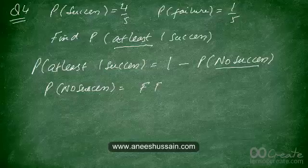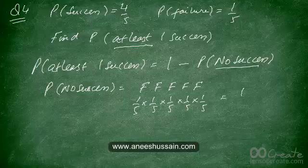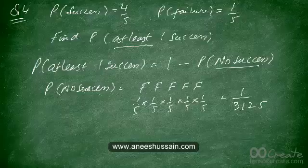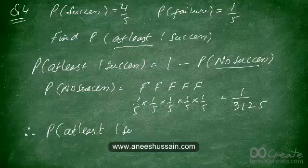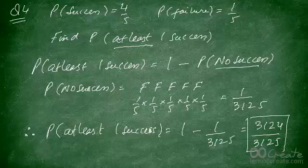We need to find the probability of all five kicks resulting in a failure. Since the probability of failure for any one kick is 1 out of 5, the probability of all five being failures is (1/5)^5, which equals 1 out of 3125. As you can see, that's a very low probability — it's very unlikely all five kicks will result in failure. Therefore, the probability of at least one success is 1 − 1/3125, which equals 3124 upon 3125.